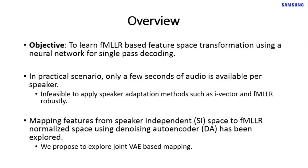Speaker variabilities degrade ASR performance. Many methods have been proposed in literature, for example feature-based approaches like VTLN and FMLLR, or speaker-specific codes like i-vectors or d-vectors. We focus on FMLLR-based feature-space transformation in this paper.